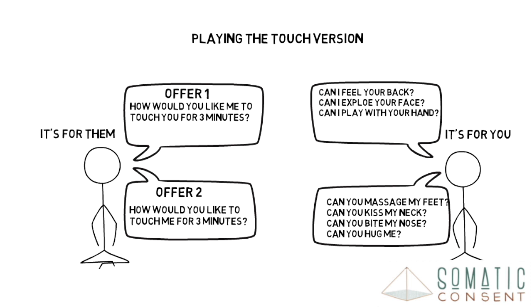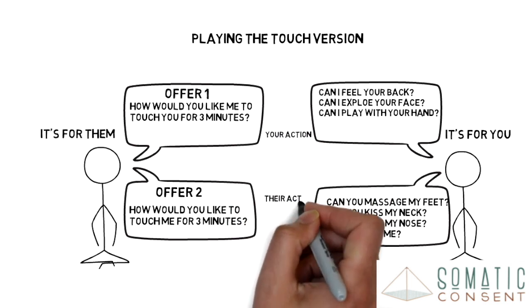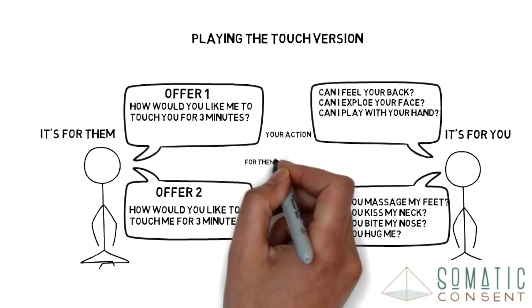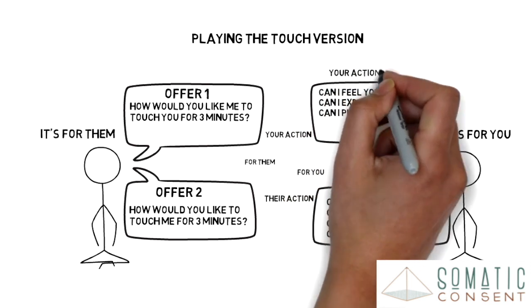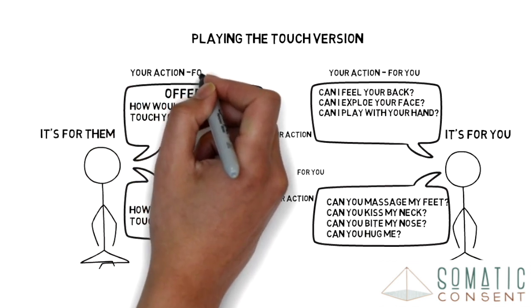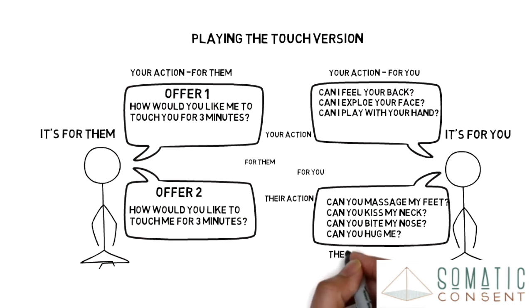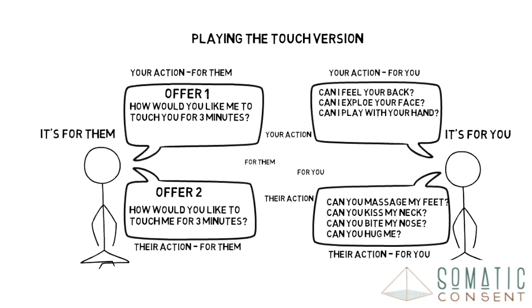Each of the four rounds of the 3-minute game creates a different dynamic — either it's your action or it's their action, and either it's for you or it's for them. These two dynamics combined in four ways create: you are in action and it's for you; you are in action and it's for them; they are in action and it's for you; and they are in action and it's for them. Each is pleasurable and challenging in a different way and will show you something about yourself, your sensuality and your sexuality.